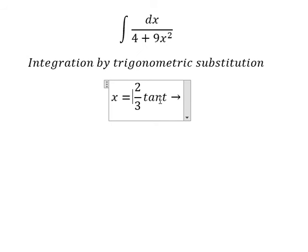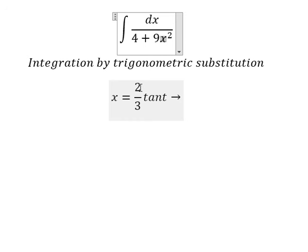Because if I put this one in here, we have 4 over 9 times tan² t. Number 9, number 9 cancel. Number 4, number 4, we can do factorization. 1 plus tan² t, we change to secant² t.